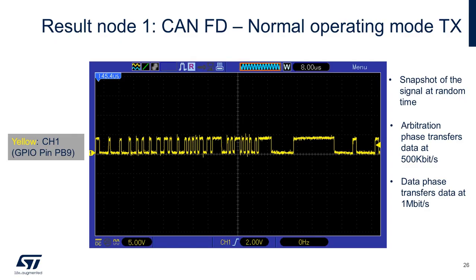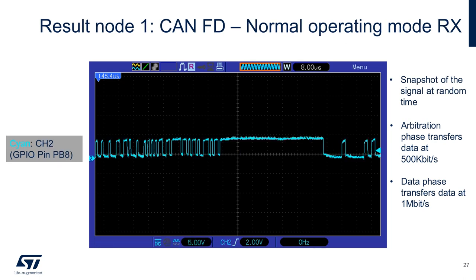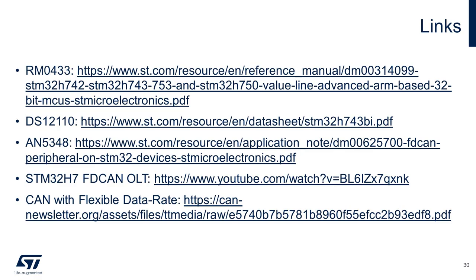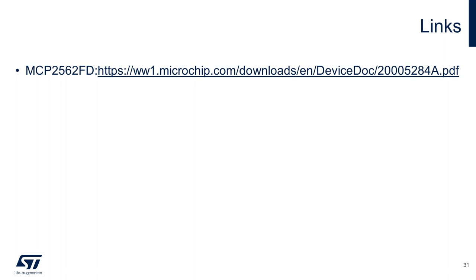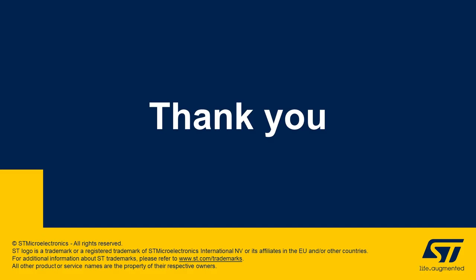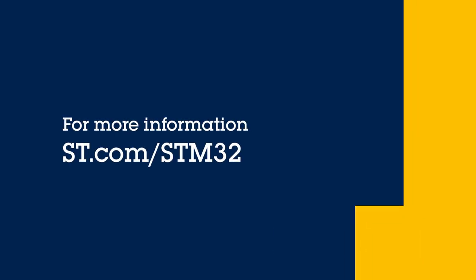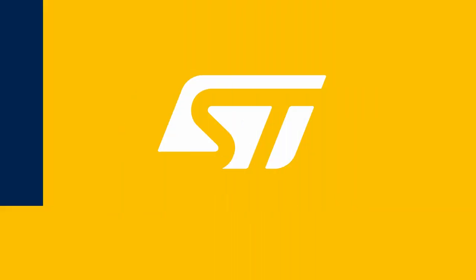For your reference, you should observe a signal like what's shown. Connecting the oscilloscope probe to pin PB9, we can observe the transmission signal — the arbitration phase runs at 500 kilobits per second while the data phase transfers at 1 megabit per second. For the reception pin PB8, we observe a similar signal. Relevant application notes, the reference manual, and the datasheet can be found in the links section. We hope you found this video helpful. Thank you very much for watching. Bye for now!